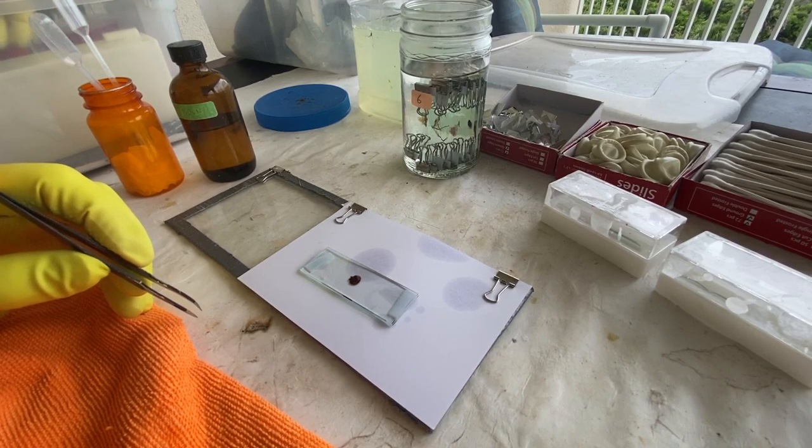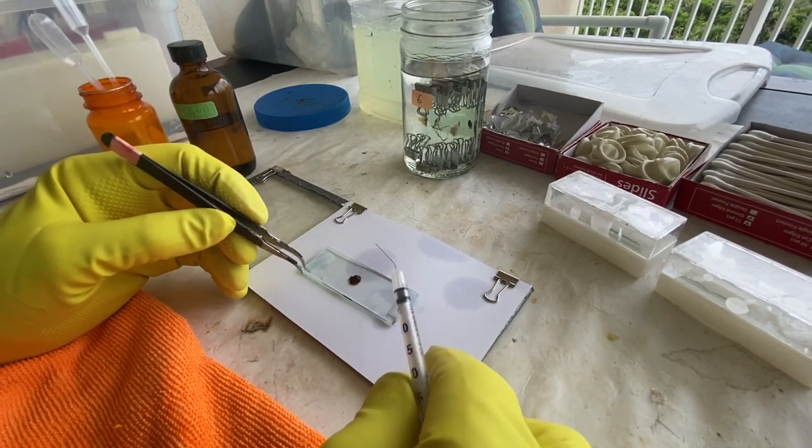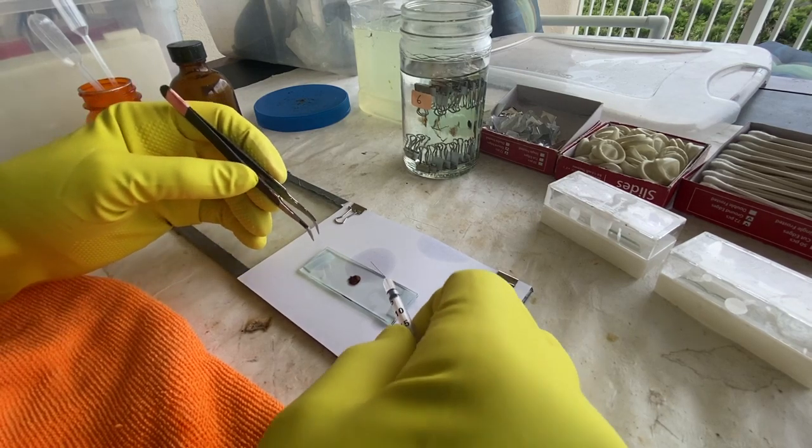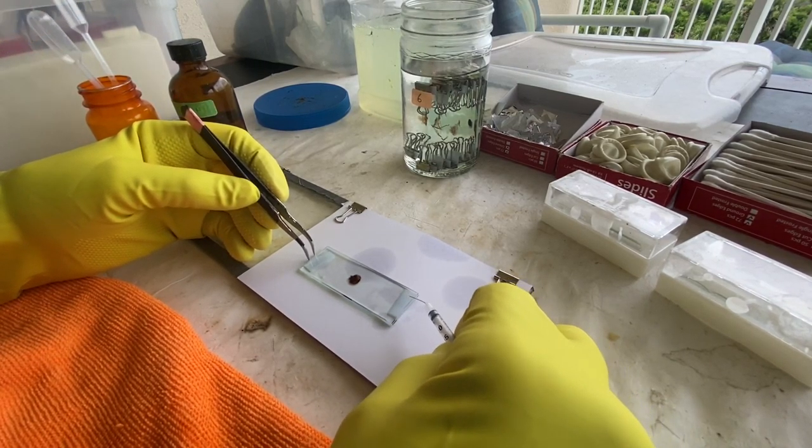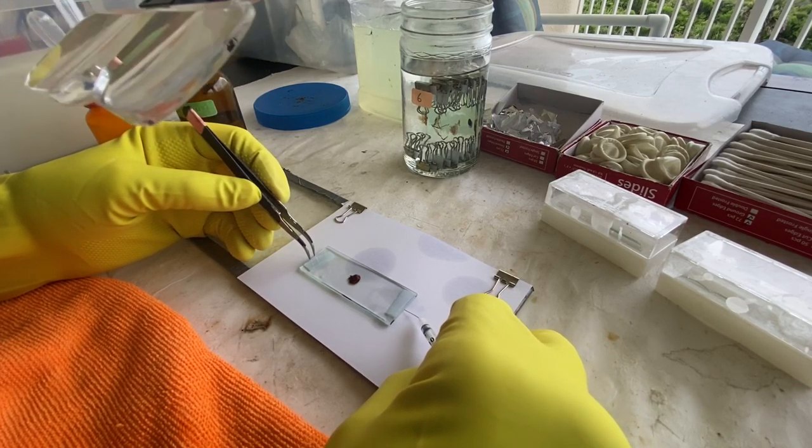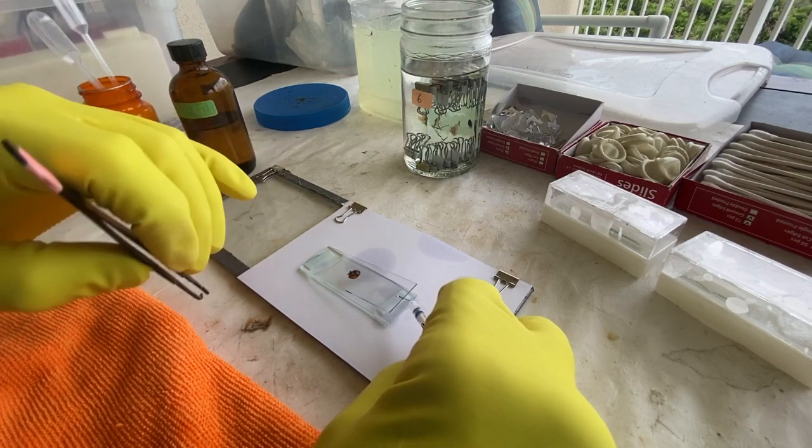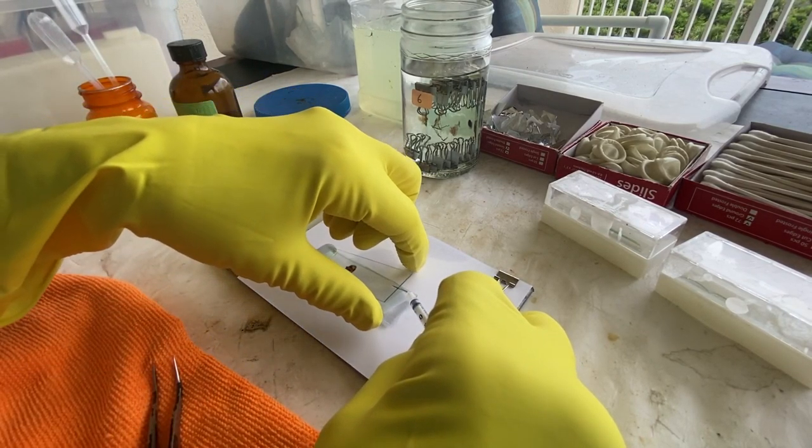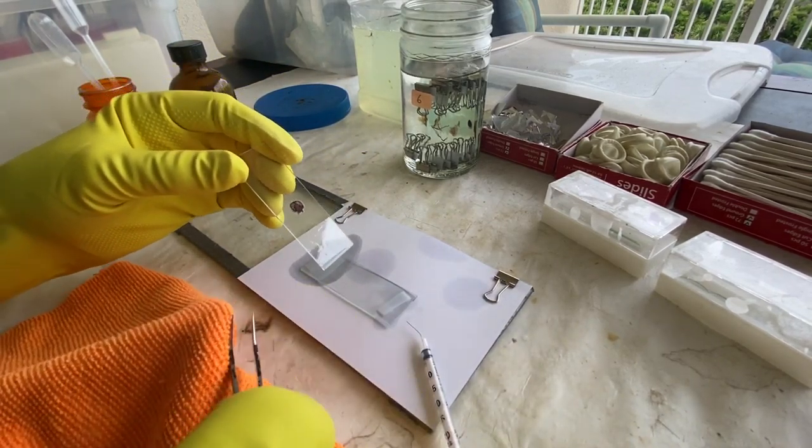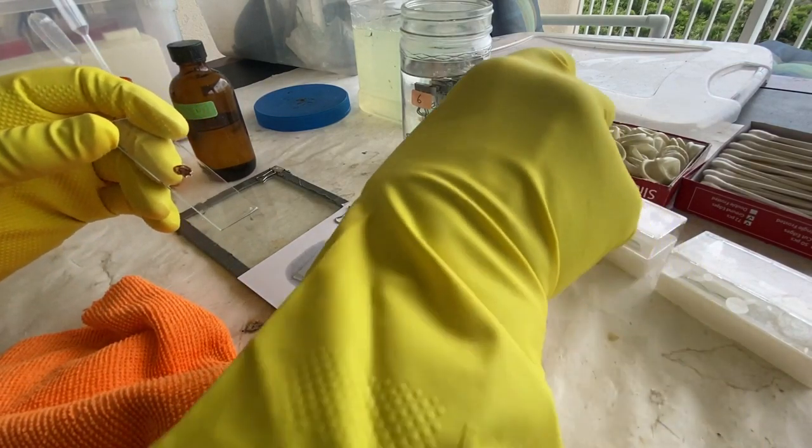Now we take the 30 gauge syringe needle. What we're going to do is we are going to pry it between the two pieces of glass and we're going to lift up the glass slide. It will stick to one or the other. Here we are, it's stuck on the top half this time. That's okay, I don't care.